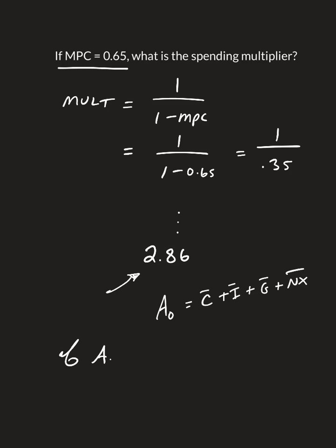if any part of this changes by one unit, GDP is going to change by 2.86 units.